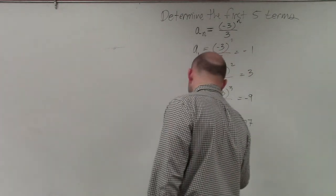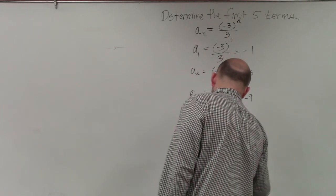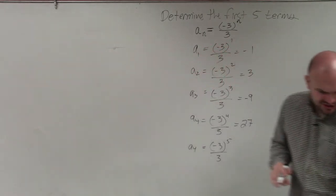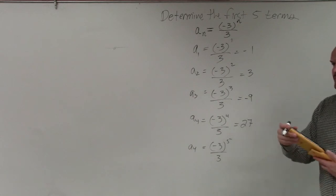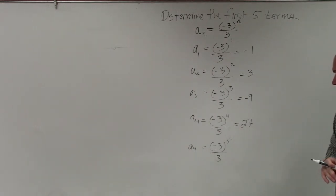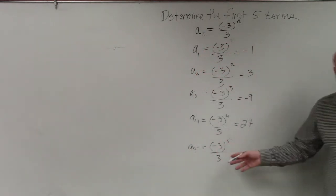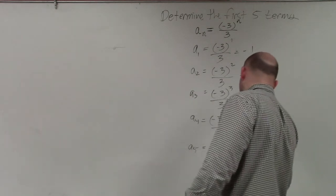And then the last one is a to the fifth, which would be negative 3 to the fifth over 3. And I believe it's 243. Yeah, it's 243. So it's negative 243 divided by 3, which will give you negative 81.